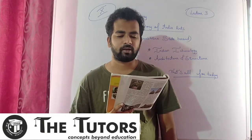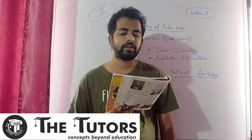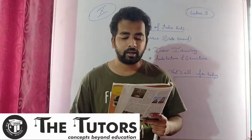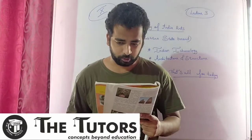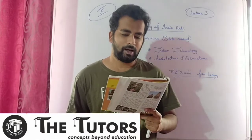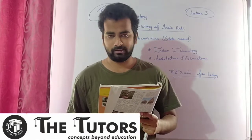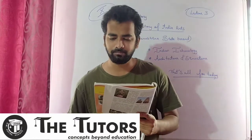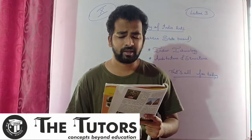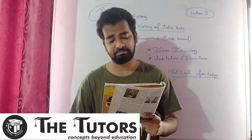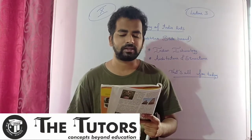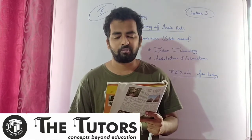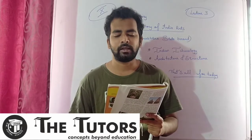The construction of Qutub Minar started during the reign of Qutbuddin Aibak in the 12th century and was completed in the reign of Iltutmish in the 13th century — it took about 100 years to build. Qutub Minar is the highest minaret in the world at 73 meters, that is 240 feet in height. The Qutub Minar complex of buildings has been declared a World Heritage Site.